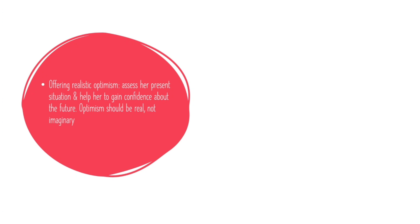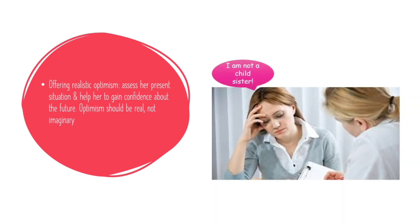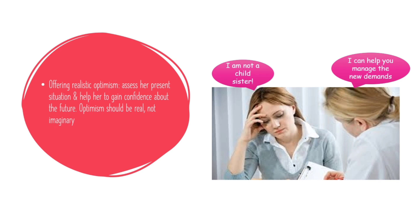Offering Realistic Optimism — we have just discussed that the patient should be given hope. But how? The patient is not a child; she cannot be consoled with made-up stories. She is a grown woman who has seen the good and bad sides of life. We give hope by being realistic. We have to assess her present situation and help her gain confidence about the future. For example, for our new mother, we can suggest family counselling, give her ideas on how to manage the new demands, and lastly give her hope that everything will be okay after a while. The optimism should be real, not imaginary.